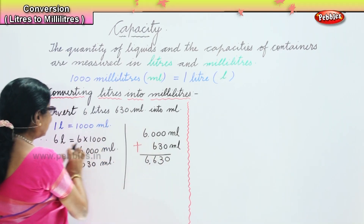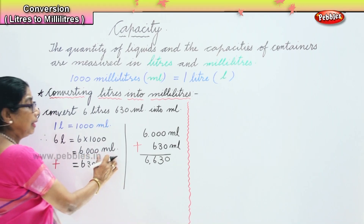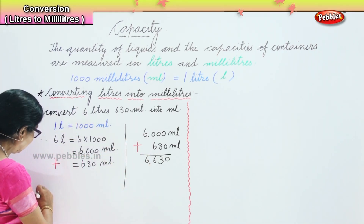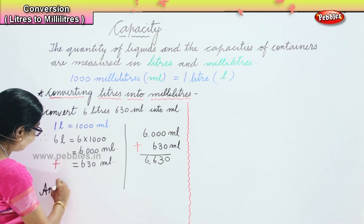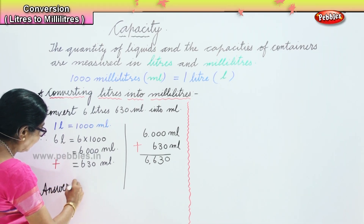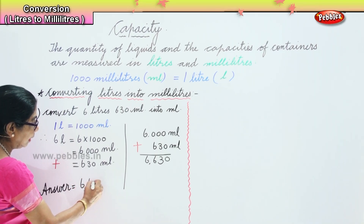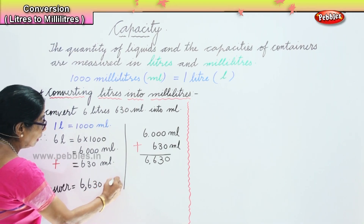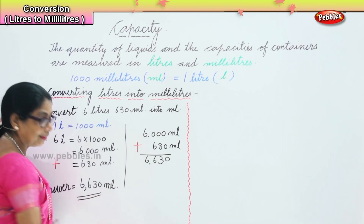So that's our answer. Converting 6 liters 630 milliliters: we get 6 into 1000 = 6000 milliliters, plus 630 ml, gives us the answer 6630 milliliters.